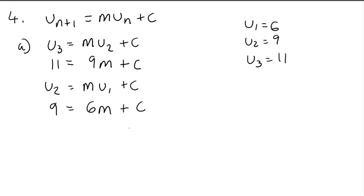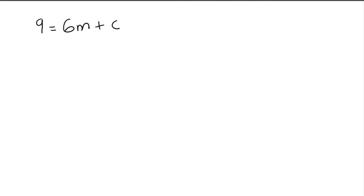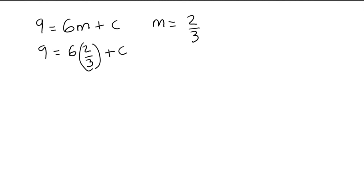Writing both equations side by side for simultaneous equations — call them equation 1 and equation 2. The c values are both 1c, so we don't need to multiply. We simply subtract: equation 1 minus equation 2 gives 11 minus 9 is 2, and 9 minus 6 is 3, so 2 equals 3m, meaning m equals 2 thirds. Using equation 2 with m equals 2 thirds: 9 equals 6 times 2 thirds plus c. Two thirds of 6 is 4, so 9 equals 4 plus c, therefore c equals 5. That's us finding the values of m and c for part 4a.